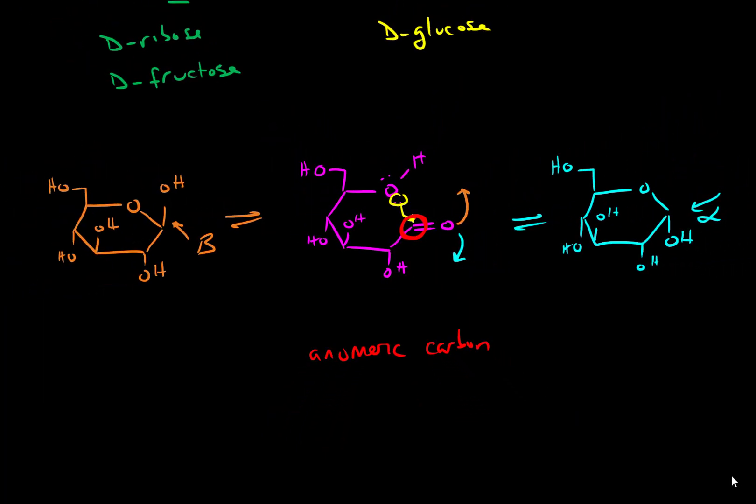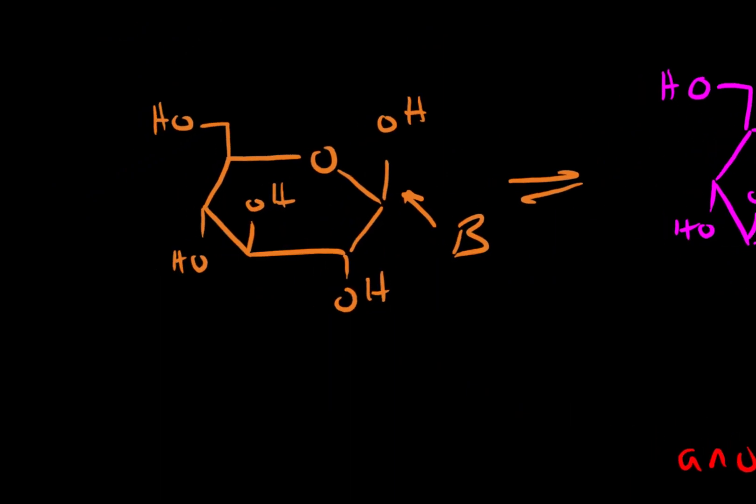So the last thing that we want to do is name these two forms of our D-glucose. When we do, we want to include the fact that it's beta and we want to include the fact that it's in the pyranose form. So we name this beta D-glucopyranose.